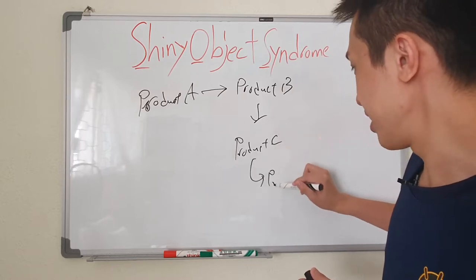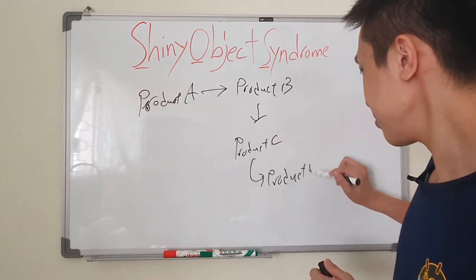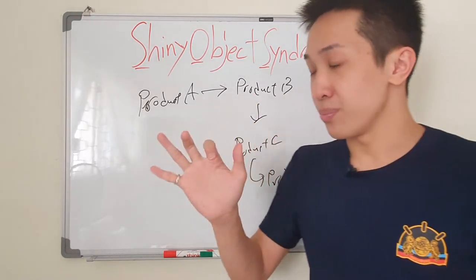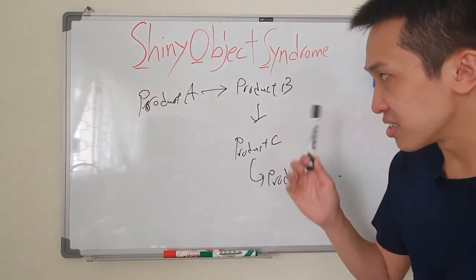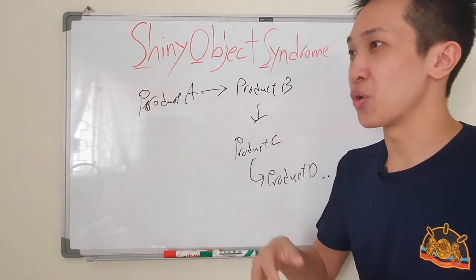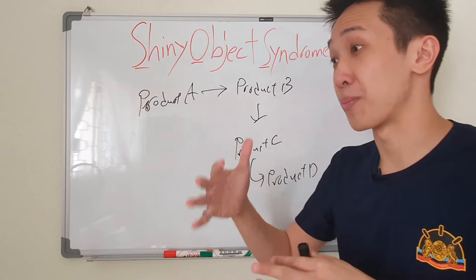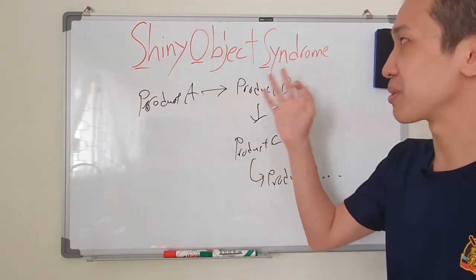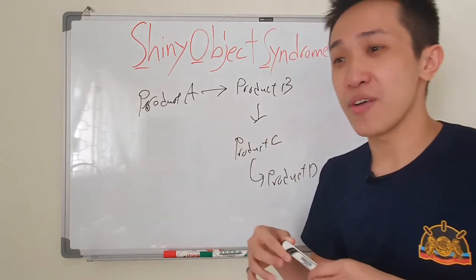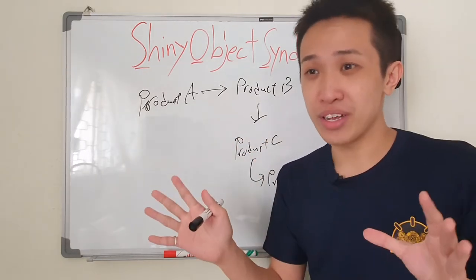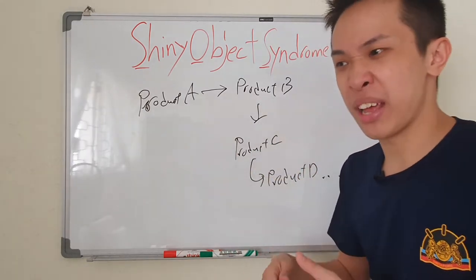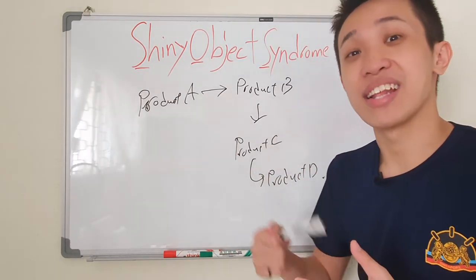Don't get me wrong, there is nothing wrong with expanding your knowledge and skill set by learning different strategies from different products. But shiny object syndrome comes when you purchase product A and you have not even done anything with it or maybe just fiddle around with it, and product B shows up and you say oh let's get it.